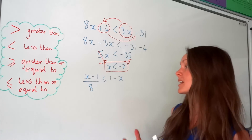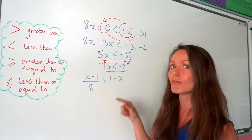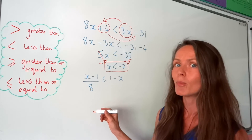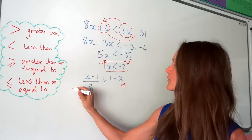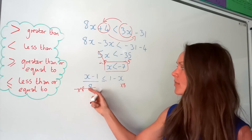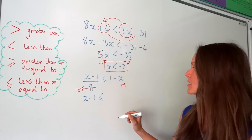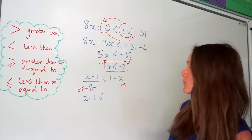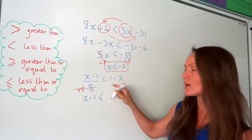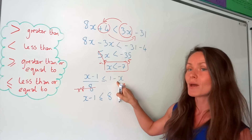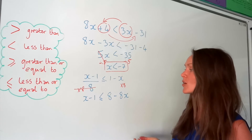Now we've got a fraction. We need to get rid of it — the line means divide, so the opposite of dividing by 8 is to multiply by 8. Remember to do the same to both sides. The left-hand side cancels, leaving x minus 1, which was the numerator. On the right-hand side, remember to multiply everything by 8 — not just the 1, but both terms. So 1 multiplied by 8 is 8, and minus x multiplied by 8 is minus 8x.